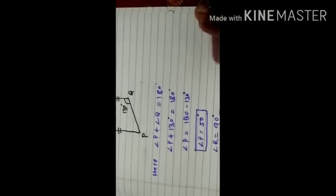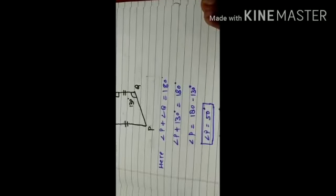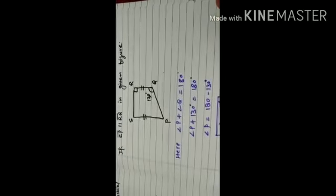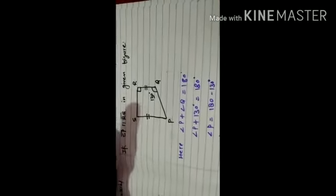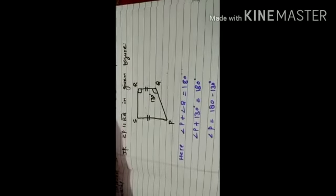So properties related, we have to find that if any side is parallel, any pair is parallel, then the adjacent angle is 180 degrees.